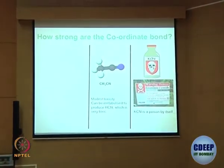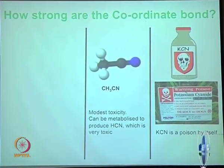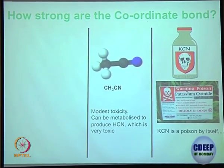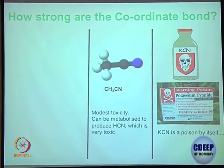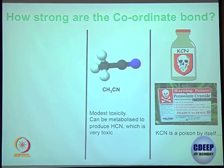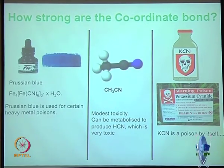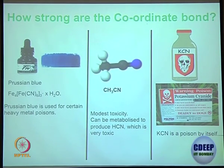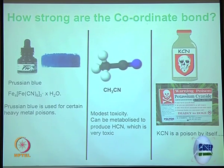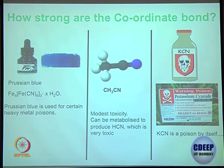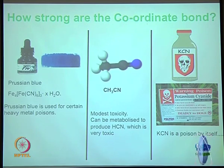Acetonitrile is a solvent — it also contains a cyano group, same as cyanide, but having a covalent bond changes things a lot. It is still toxic, but not as toxic as potassium cyanide. Prussian blue is widely used and involves cyanide coordination. None of these chemicals are truly friendly — except perhaps water at home. Do not experiment with any chemicals without knowing their properties; do not consume, touch, or smell them directly.